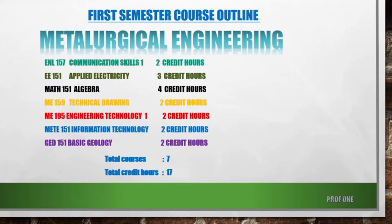Your mark will be multiplied by the credit hours of each course. For example, if you get 30 in Algebra, they'll multiply 30 by 4. If you get 70 in Applied Electricity, they'll multiply it by 3. You should note this and get a background in these subjects before you come to the university so you can pass your first semester exams.